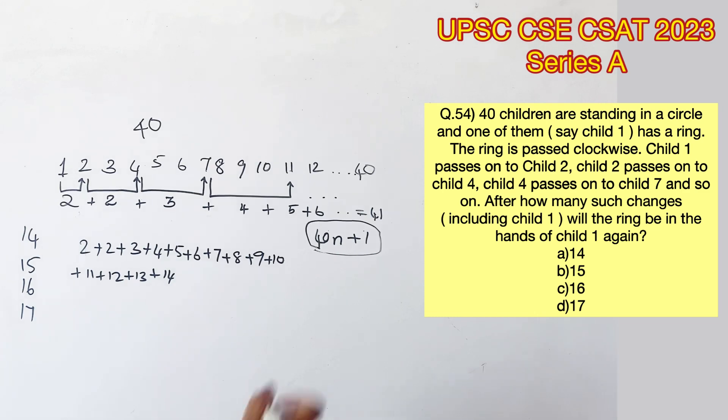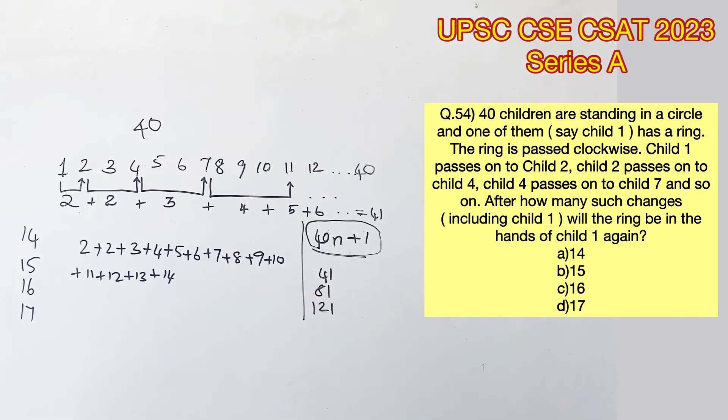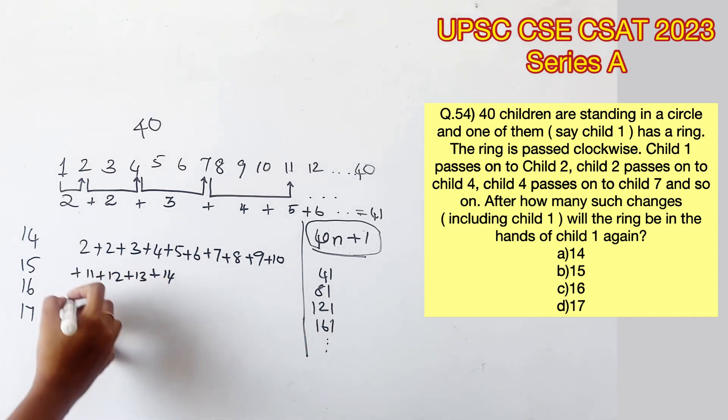So let's add till the 14th change. We know that the sum should be in the format 40n plus 1, which means if you consider n as 1, you will have 41. If you consider n as 2, you will have 81. If n is 3, you will have 121. If n is 4, you will have 161, and so on.